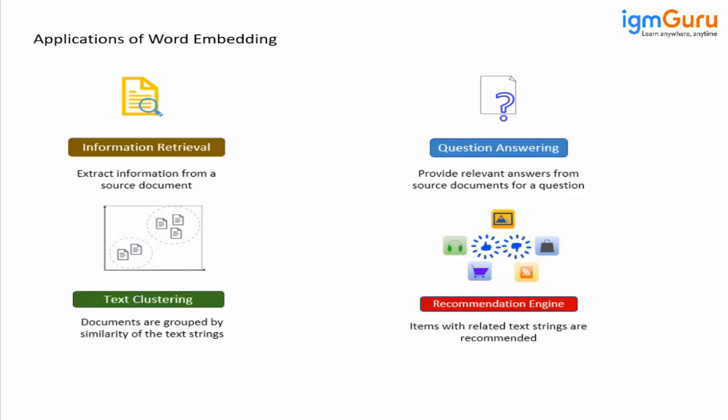One application is extracting information from a source document — this is what we are doing in RAG, which is Retrieval-Augmented Generation. In RAG we retrieve relevant information, and for that we need the relevant context provided by word embedding.